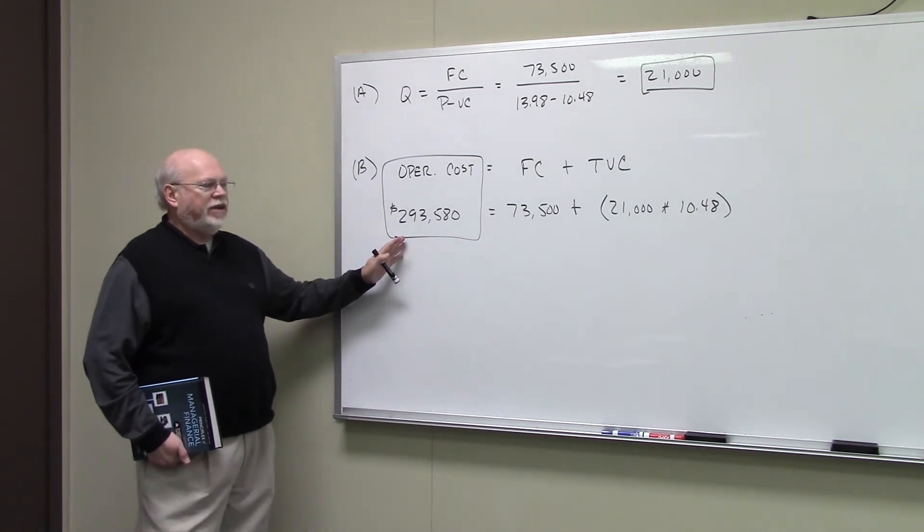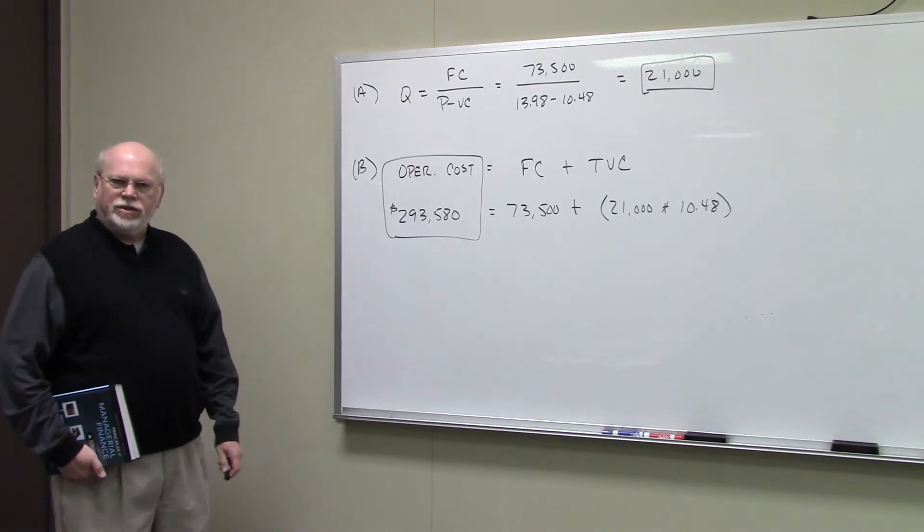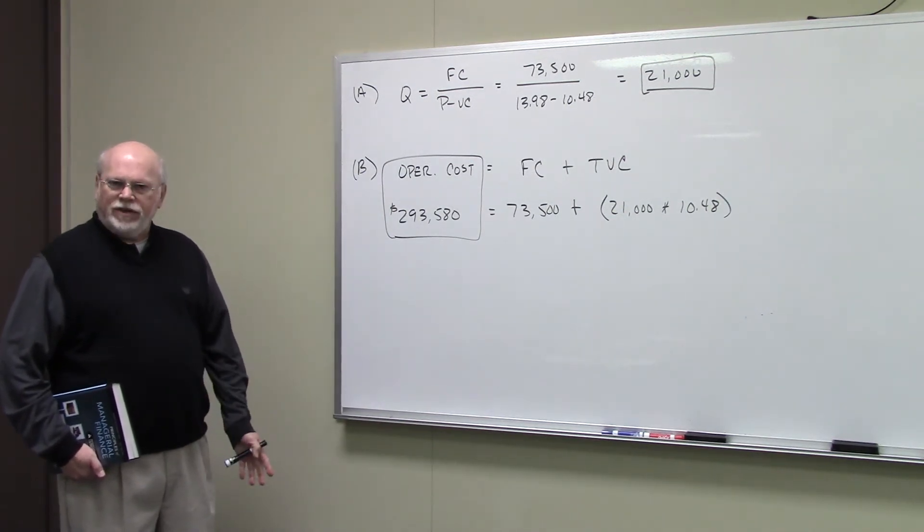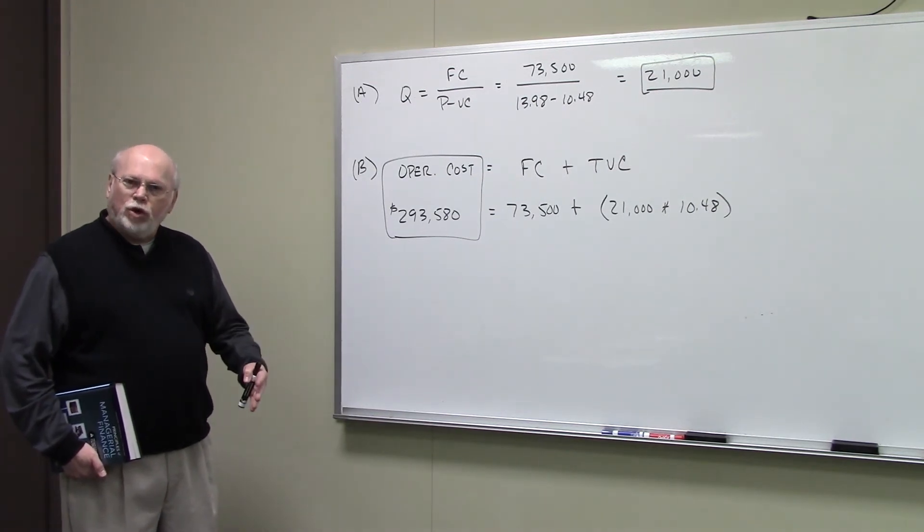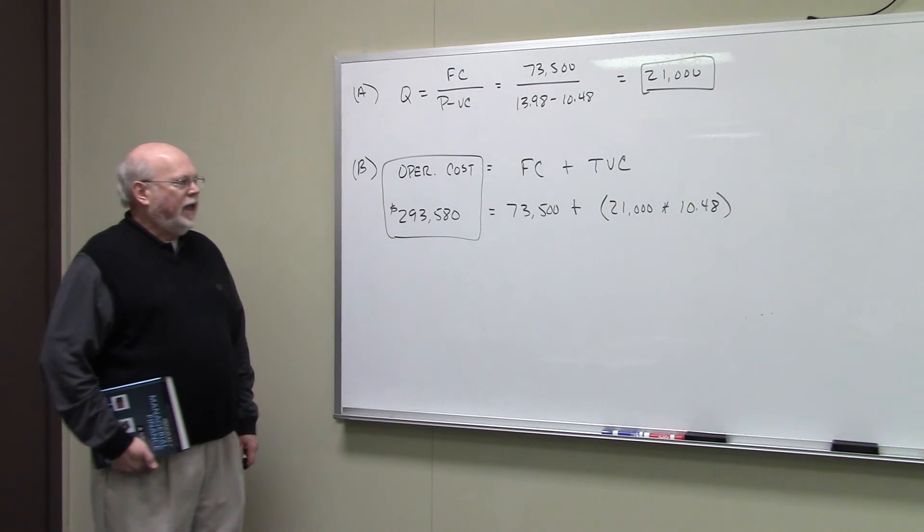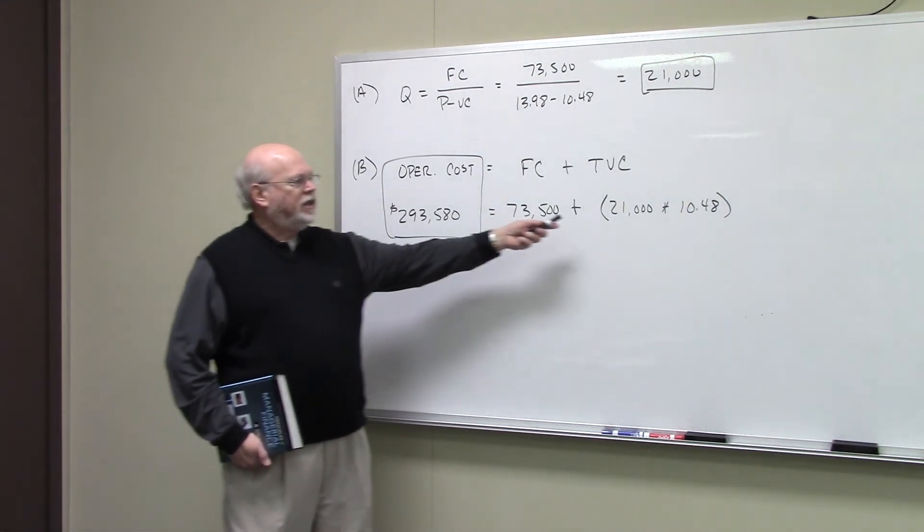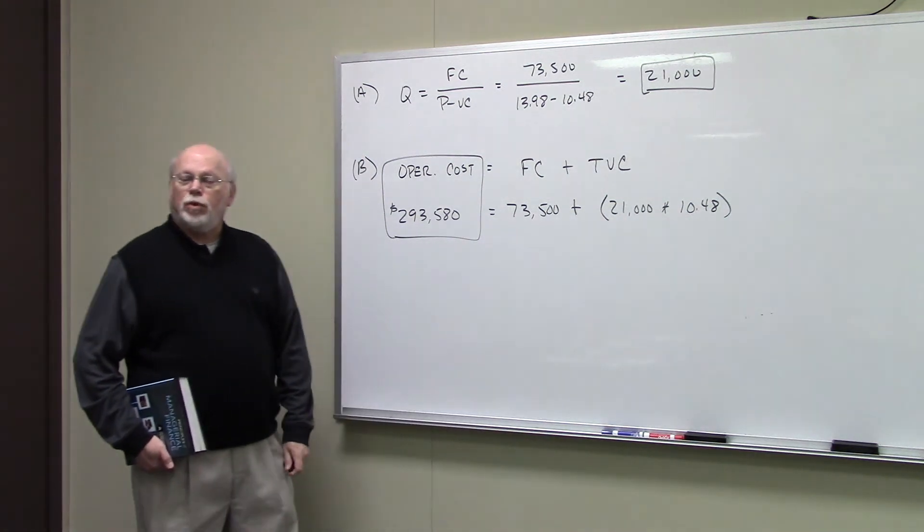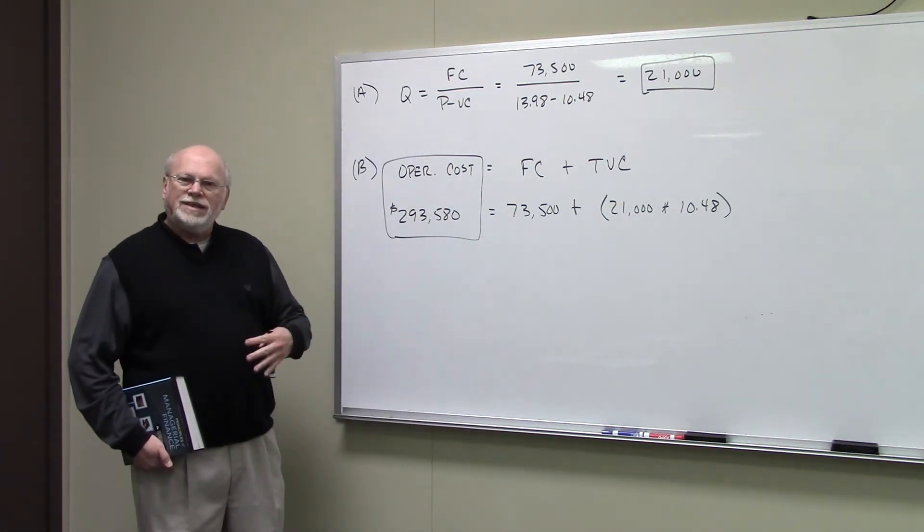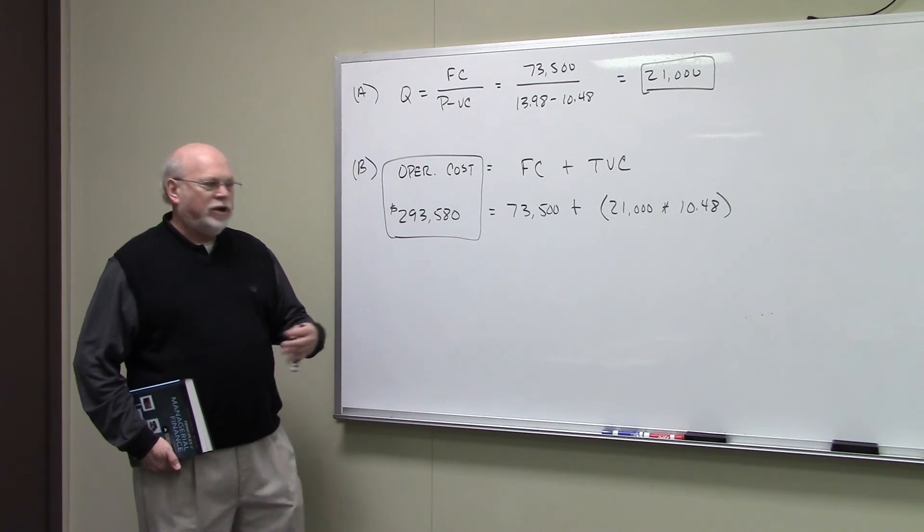They also want us to calculate the operating cost at breakeven. Now, the operating cost of the company is the company's fixed cost plus its total variable cost. Total variable cost is the number of units produced and sold multiplied by the variable cost per unit. So in this case, to find the total operating cost,